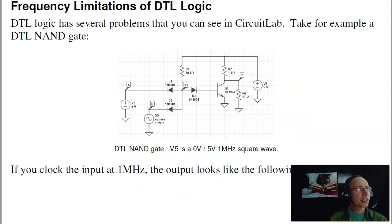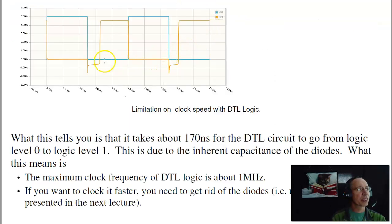There are a couple of limitations for DTL. That's part of the reason it kind of faded out of fashion. One of the problems is the frequency limitation. Diodes are inherently capacitors. When a diode is turned off, I have a depletion zone and two charges on both sides of the depletion zone that make it a capacitor. Capacitors and resistors make RC circuits. There's a max frequency they can operate. So if you take this circuit and try to operate at higher and higher frequencies, you see something like this. This is from CircuitLab. I cranked up the clock frequency and you can see right here, it takes about 80 nanoseconds to go from logic level zero to logic level one. That's actually 170 nanoseconds. That sets the upper limit of frequency for DTL logic.